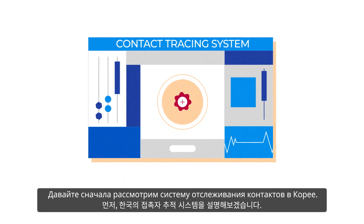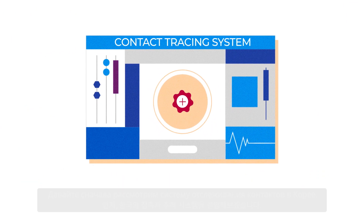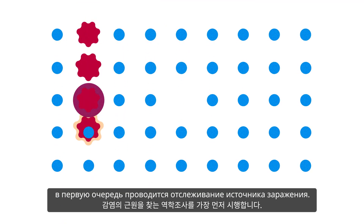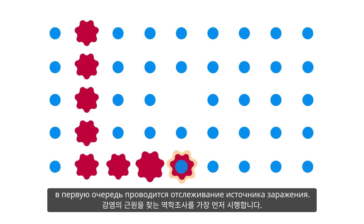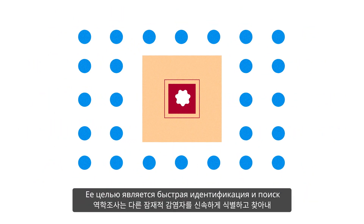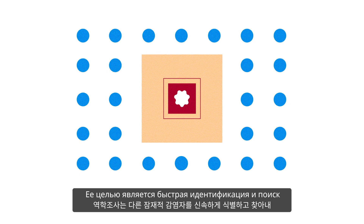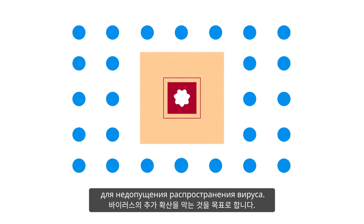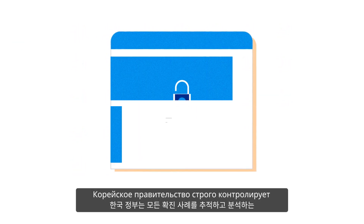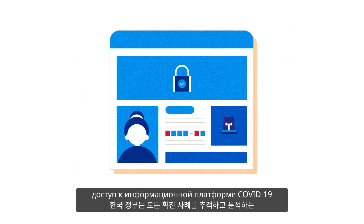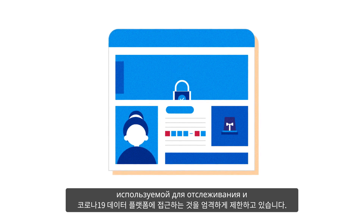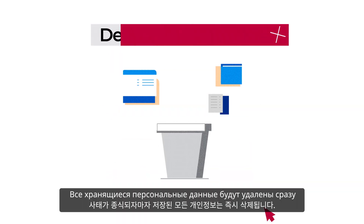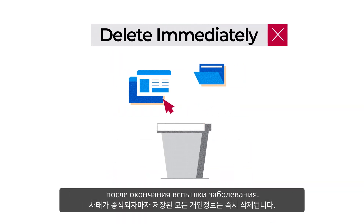Let's first take a look at the contact tracing system in Korea. When a patient tests positive for the coronavirus, an epidemiological survey is the first step in tracing the origin of the infection. Its goal is to quickly identify and locate other potentially infected persons to curb the further spread of the virus. The Korean government strictly controls access to the COVID-19 data platform, which is used to track and analyze all confirmed cases. All stored personal data will be deleted once the outbreak is over.